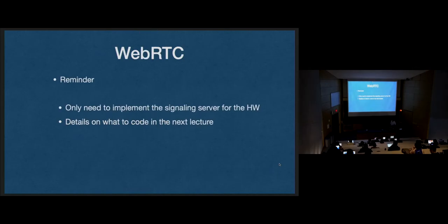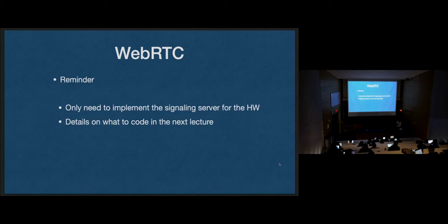The only one you're implementing on the homework is the signaling server. The other two servers — we're not going to use a TURN server on the homework at all, and for the STUN server, we're going to use a public Google STUN server. As much as I don't really want to get Google involved in our peer-to-peer connections, it was the easiest thing to do. Maybe next semester, writing a TURN server will be on the homework, but not today.